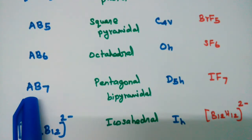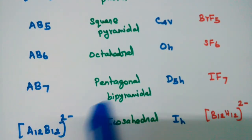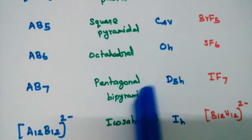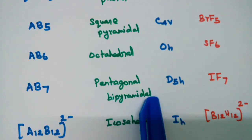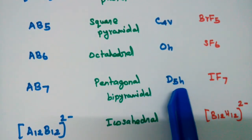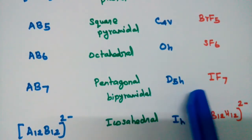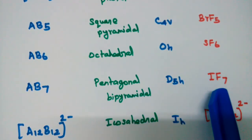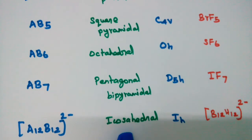Next, AB7 pentagonal bipyramidal structure, point group D5h, example IF7.